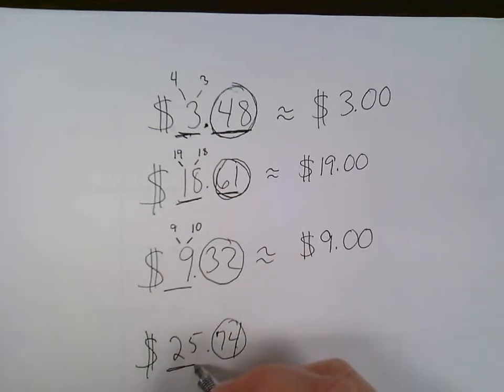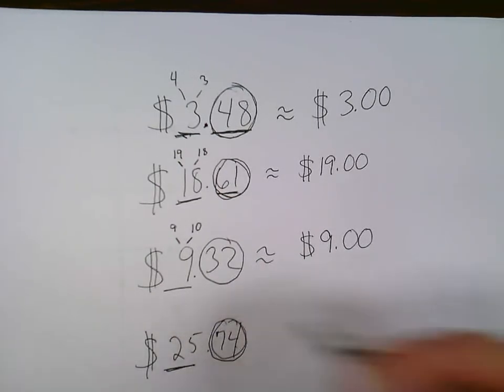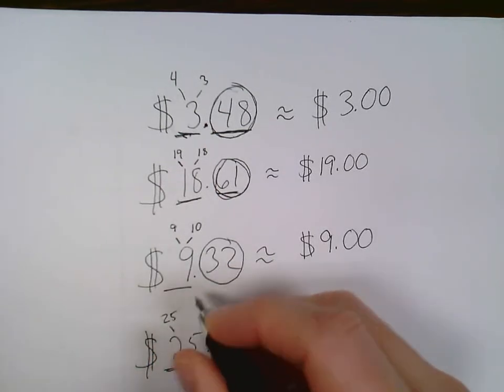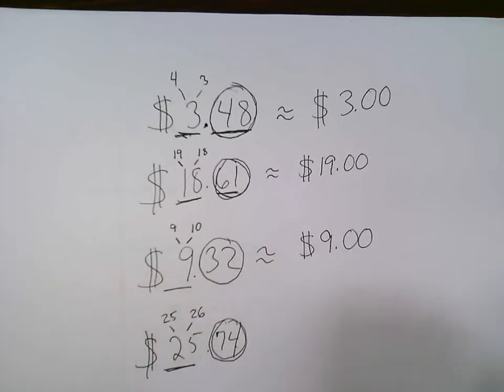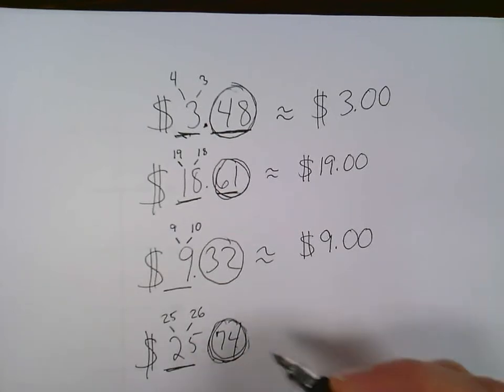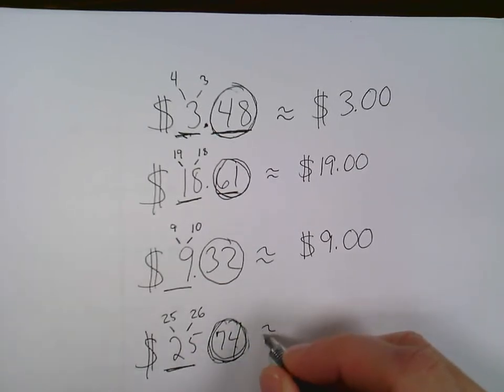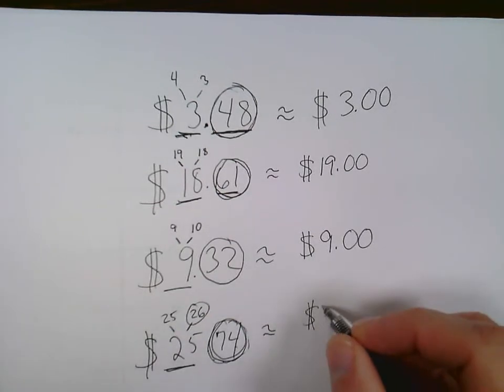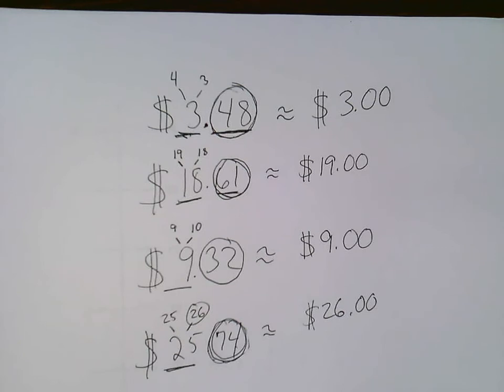So 25, underline the dollar amount, circle the coins, circle the change amount. 25 will either stay a 25 or it will go up to a 26. 74 cents is larger than 50 cents, so it is going to go up to 26. So $25.74 rounds up to $26.